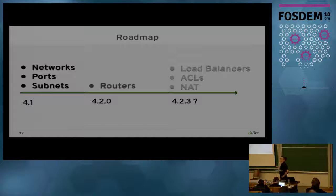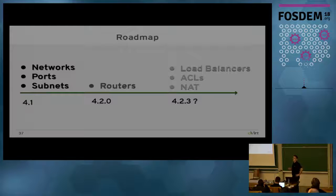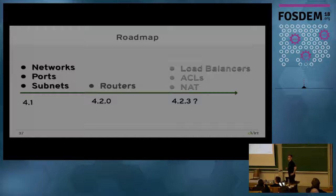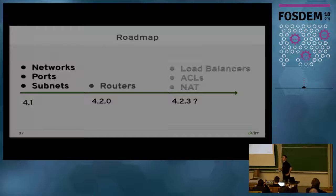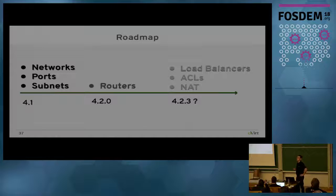Our roadmap: at the beginning for OVN, we just needed networks, ports, and subnets. But when ManageIQ started using the provider, it turned out they need much more — they need routers, load balancers, and access control lists. Network ports and subnets we already have. We are almost done implementing routing, which is already partly available in oVirt release 4.2. For the next releases, we have plans to implement load balancers, access control lists, and there could be other features later such as quality of service.